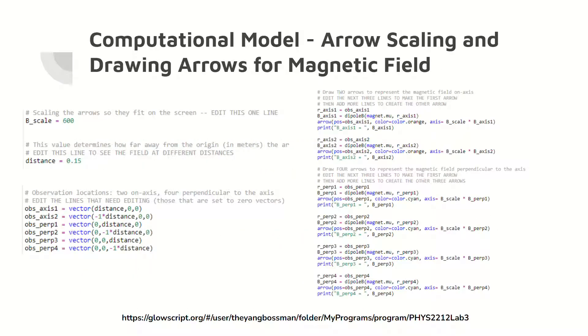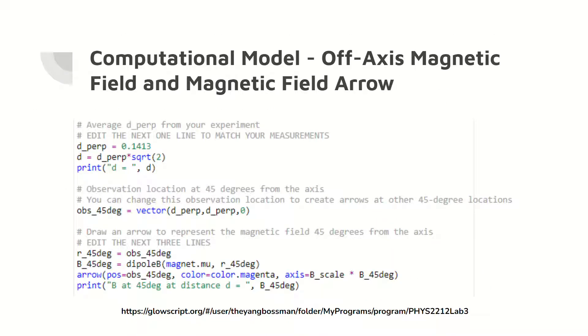Here's the code for scaling and drawing the arrows of the magnetic field of the bar magnet, which includes the locations of the arrows and what they represent, or the axis. Here's the code for calculating the off-axis magnetic field and the corresponding magnetic field arrow.